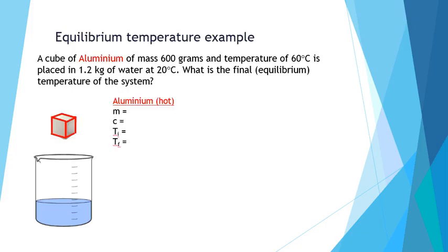First of all, let's record the data we have for aluminum, the hotter of the objects. It has a mass of 600 grams, so we enter that in as 0.6 kilograms. All masses are entered in as kilograms. It has a specific heat capacity of 897 joules per kilogram per kelvin from our notes, and an initial temperature of 60 degrees Celsius. We're trying to find the final temperature.